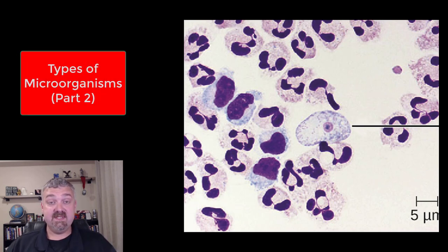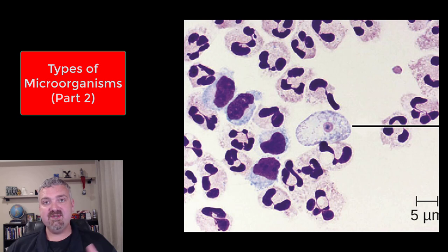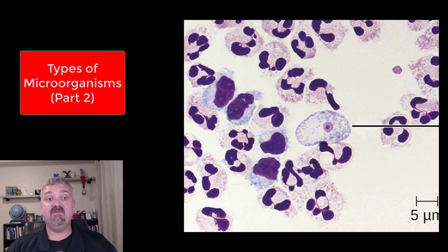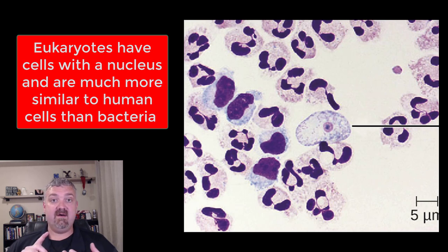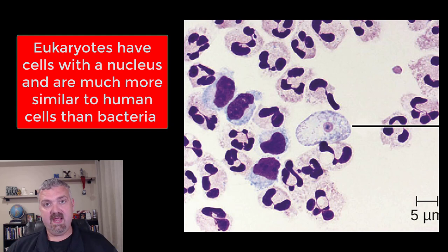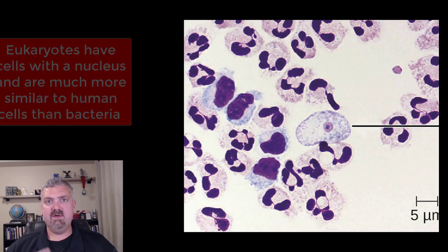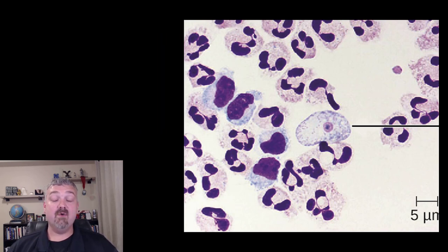Hey everybody, Dr. O here. This is part two of the series where I'm just briefly introducing the different types of microbes you're going to be exposed to — pun intended — in microbiology this semester, mainly just so you recognize them. We'll talk about specific examples when we need to. I left for this second video all the different eukaryotes. We already talked about viruses, which aren't cells, bacteria, which are prokaryotes, and archaea. Now we're going to talk about the different types of eukaryotic organisms in microbiology — protists, fungi, and multicellular parasites.